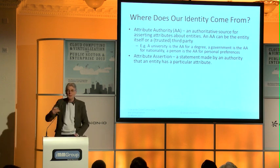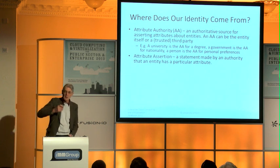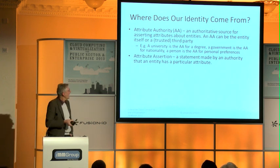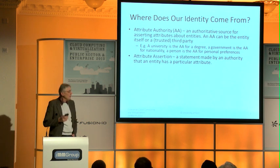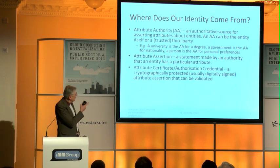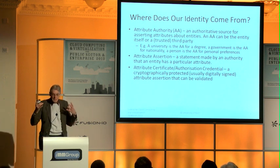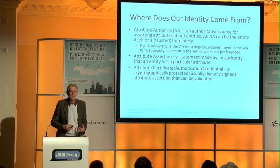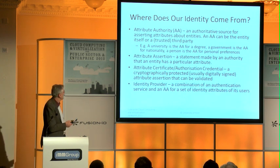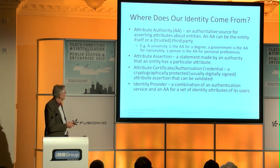Those attributes are then used to authorize you to access the cloud. So you log in to your identity provider, which is your own organization. It then makes some attribute assertion about you to the cloud provider, which will then give you access based on it. It usually sends the assertion as a digitally signed piece of information across the internet so that it can't be tampered with. We would call that an attribute certificate or an authorization credential. The identity provider is your organization that does this.